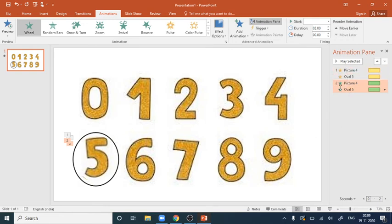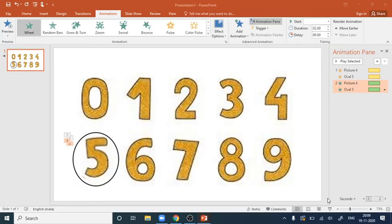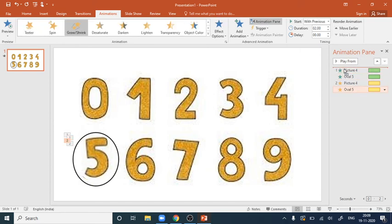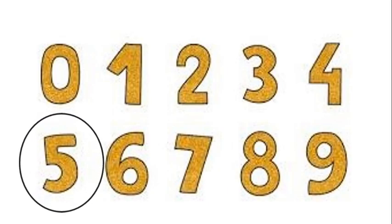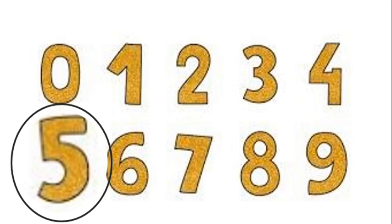Looking at the animation pane, the current order needs adjusting — I want the oval outline to appear first, then the zoom. So I'll move the oval animation to the top. Now on the first click the oval appears, and on the second click the grow/shrink zoom animation plays. Let's preview the slide show: first the oval appears, then on the second click the zoom effect plays.